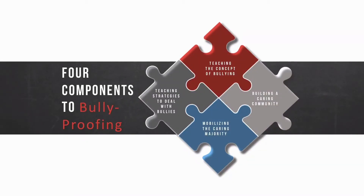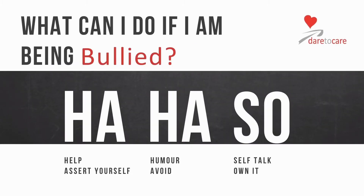Mobilizing the caring majority is critical. The third component is teaching strategies to deal with the bullies. In the parent session and throughout the student modules, these six skills are taught using the mnemonic device HAHASO. Each of these skills is a non-reactive skill that kids need to learn in order to deal with bullying effectively: Help, Assert themselves, Humor, Avoid, Self-talk, and Own it. We call it their tool belt of skills.